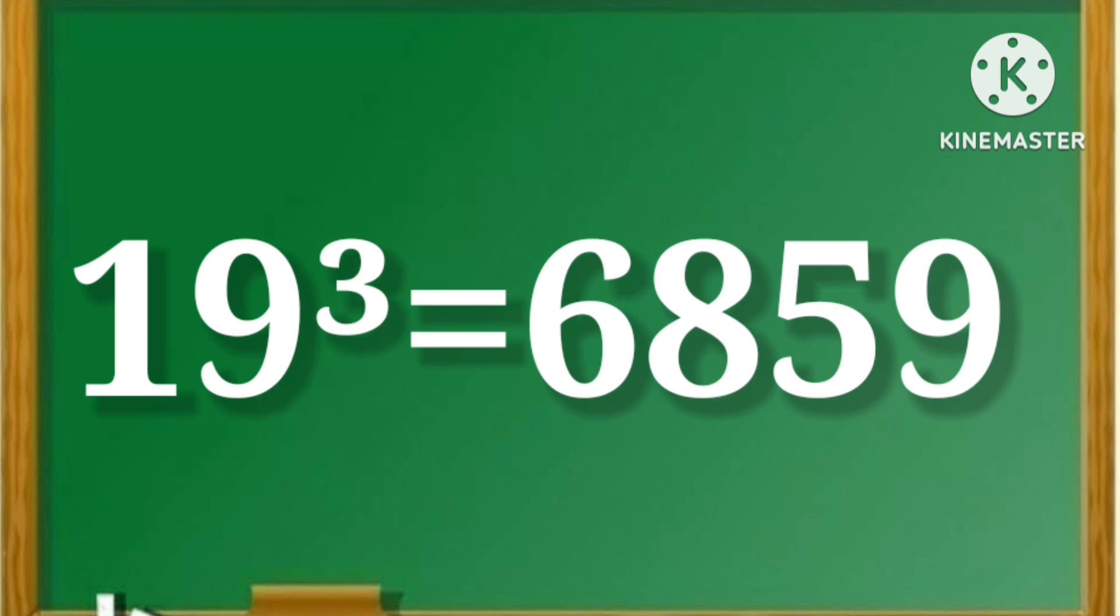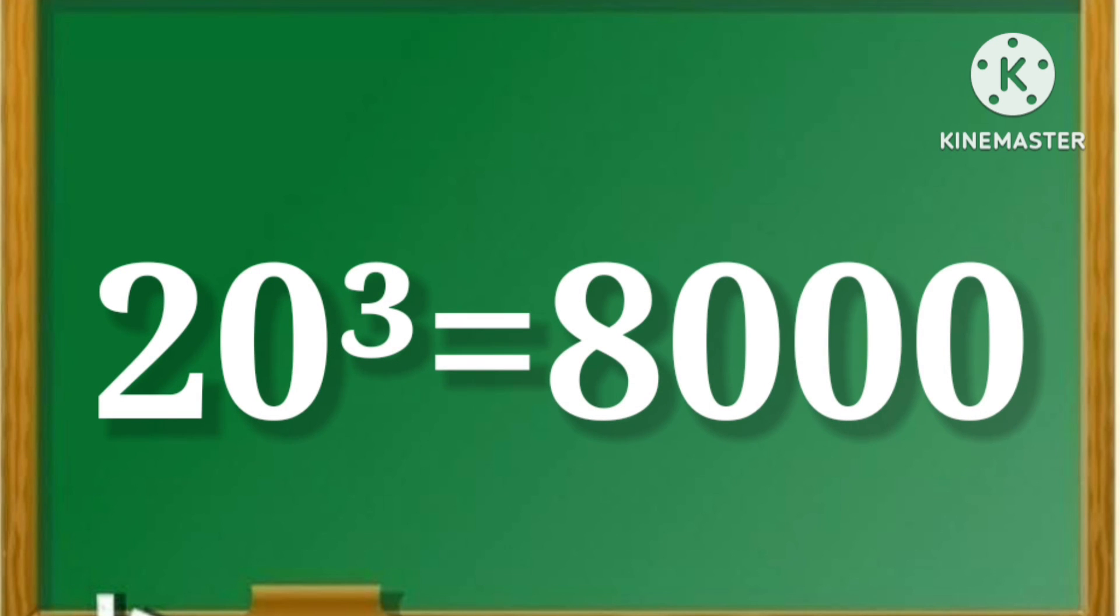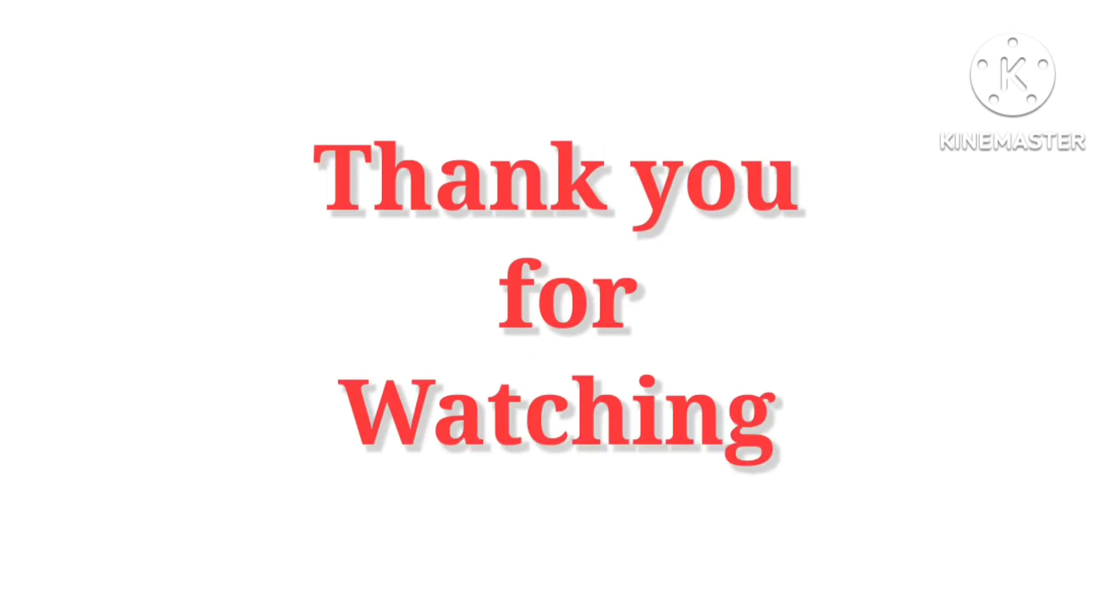19 cube is equal to 6859. 20 cube is equal to 8000. Thank you for watching.